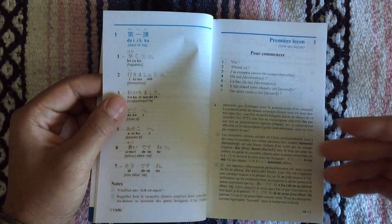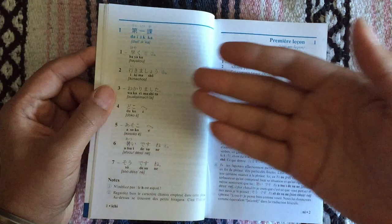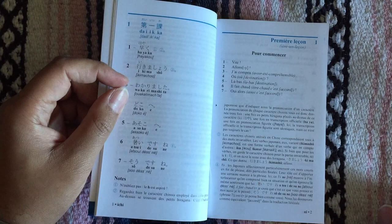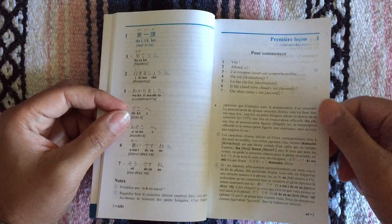As all Assimil courses, it has the target language on one page with the transliteration and includes the Japanese writing, and the translation on the other page. Every seventh lesson of course being a review.